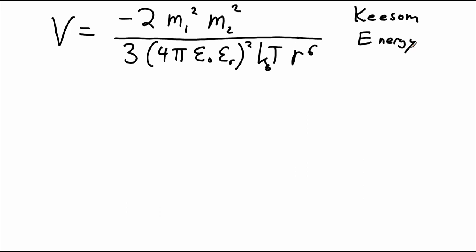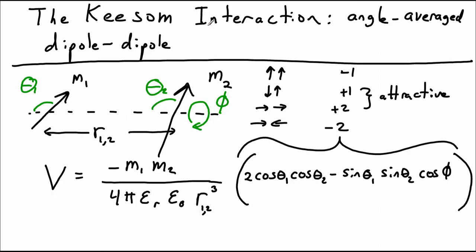The result is the Keesom energy shown here. We can examine this equation and see a couple of things that are interesting. First of all, note that the dipole moments are factored as squares. If we compare to the original equation for a specific pair of dipoles at a specific angle, we can see that it's linear in each dipole moment. So why is it squared in the Keesom interaction?